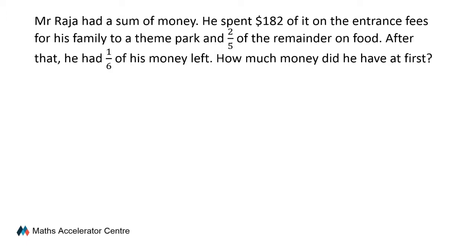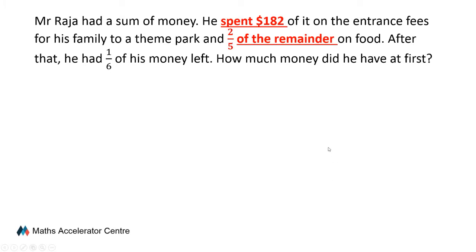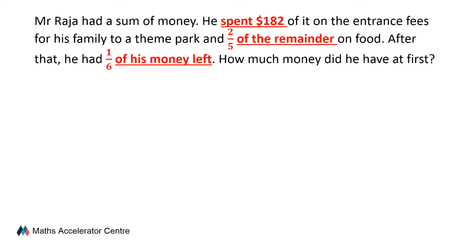After reading the question, the first step is to identify the keywords. The first set of keywords informs us that he spent $182 for the entrance fees to a theme park. The next set indicates he spent two-fifths of the remainder on food. The third set tells us that after spending on both, he had one-sixth of his money left. The question asks: how much money did he have at first?